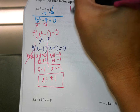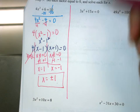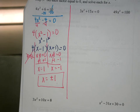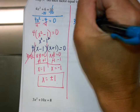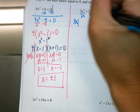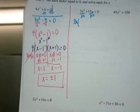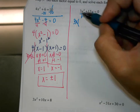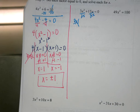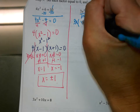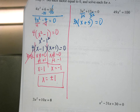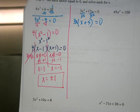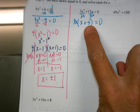Next one — is this one already set equal to 0? Yes. Now we check: is there a GCF? Yes. What is the GCF? 3x. So we're taking out a 3x, dividing each of these terms by 3x. This reduces and what are we left with? X plus 5 equals 0. Can I factor that any further? No — because these two terms aren't squares, I can't factor further.